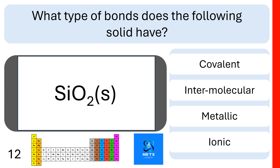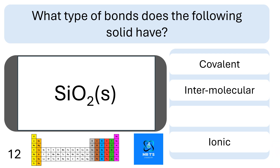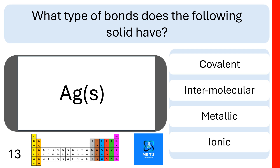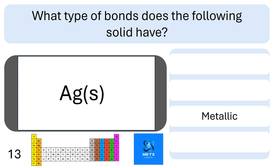Question 12. What type of bond does the following solid have? This is silicon dioxide or silicate. Does it have covalent bonds, intermolecular bonds, metallic bonds, or ionic bonds? Well done if you identified that it had covalent bonds. What type of bonds does the following solid have? This is silver. Does it have covalent, intermolecular, metallic, or ionic? This has metallic bonds.